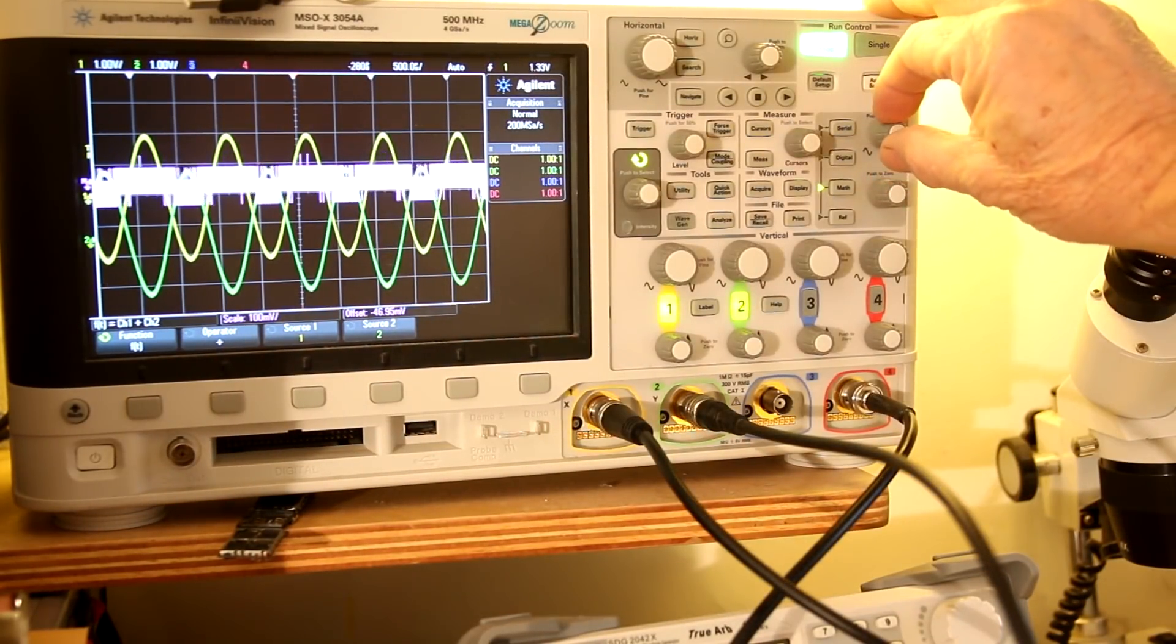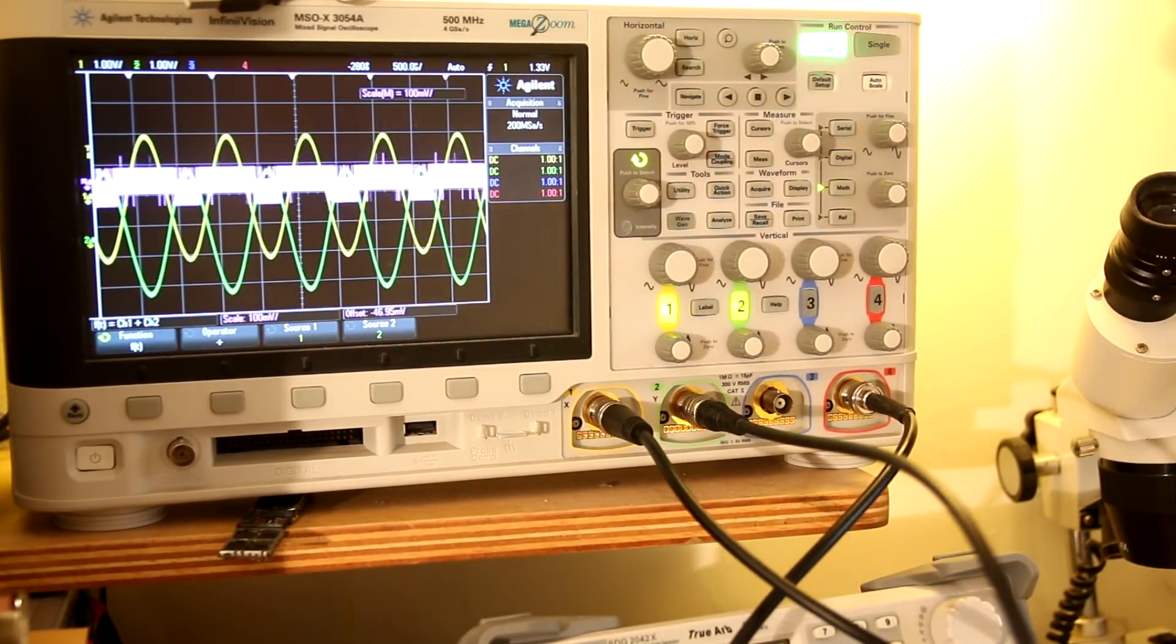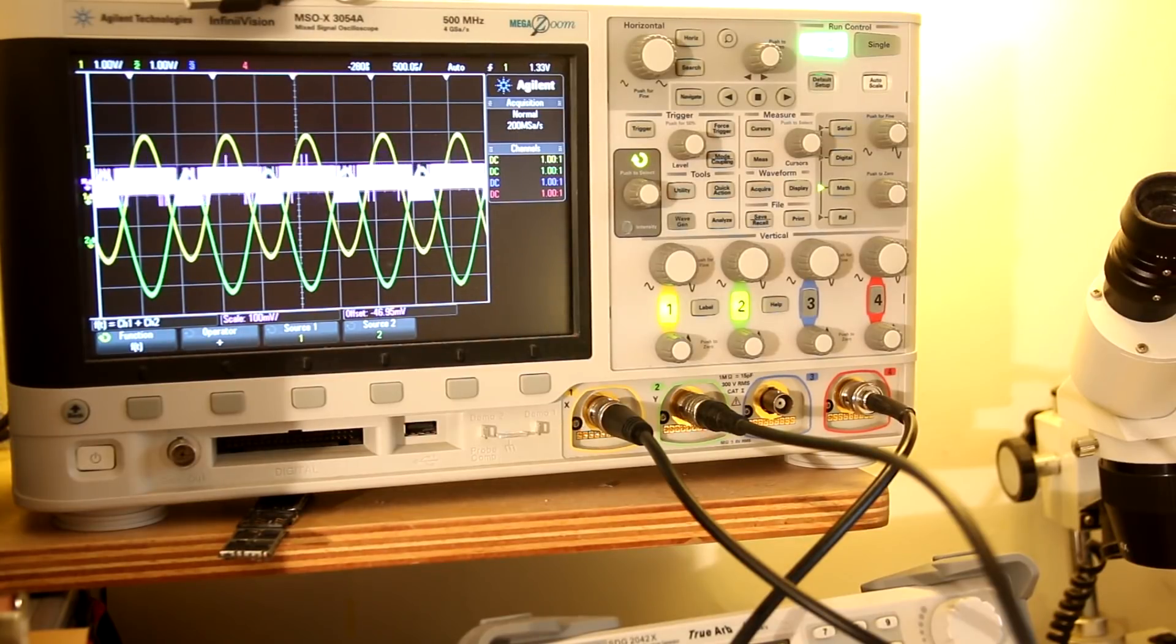Here, I'm setting the gain of that very strange waveform to 100 millivolts per division. The result is garbage. Remember, there's only a 10 millivolt difference between these two input channels, but this garbage occupies something like 200 millivolts on the screen.